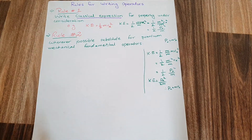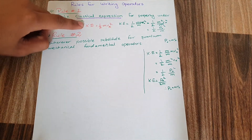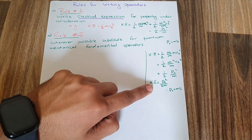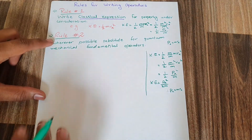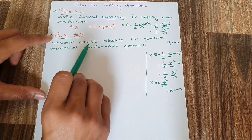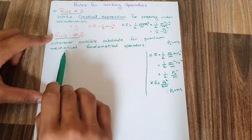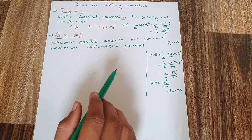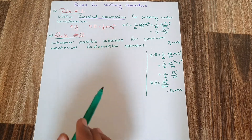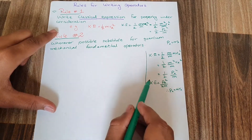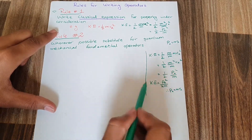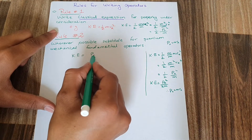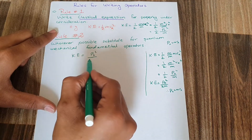So kinetic energy can be represented by two formulas: the first is half mv squared, and the second is p_x squared over 2m. Rule 2 says that wherever possible, substitute the quantum mechanical fundamental operator. Taking the kinetic energy equation, kinetic energy equals p_x squared divided by 2m.